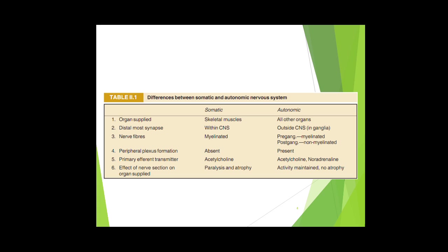The differences between somatic and autonomic nervous system are in your textbooks. Majorly, the somatic nervous system supplies skeletal muscles while the autonomic nervous system supplies all the organs. Regarding synapses — the junction of two neuron terminals — the distal-most synapse of the somatic nervous system is present within the CNS, while that of the autonomic nervous system is outside the CNS.